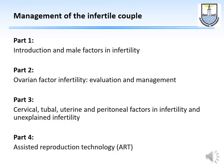This is a series of four talks. In part one we are going to give an introduction and talk about male factor infertility. In the second part I'll talk about ovarian factor infertility. In part three, cervical, tubal, uterine, and peritoneal factors, and also unexplained infertility. And finally in part four, assisted reproduction technology.